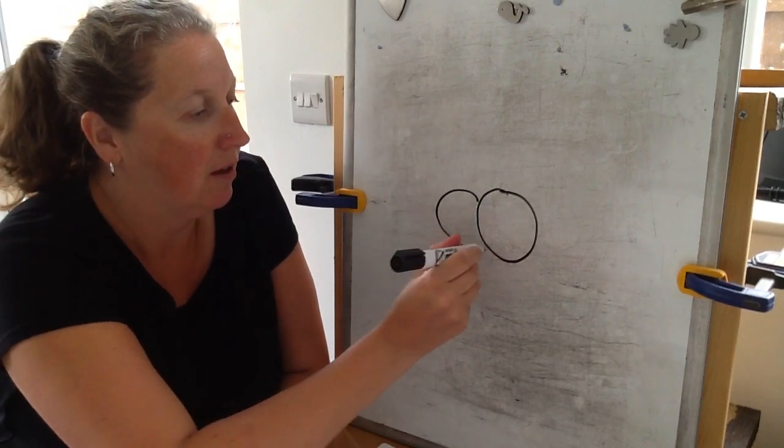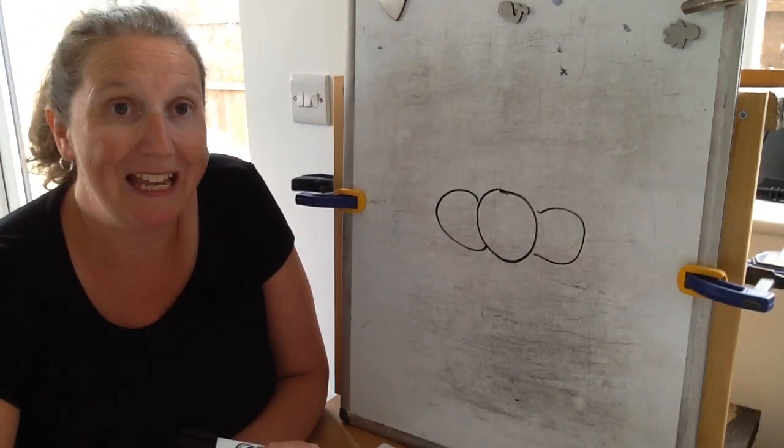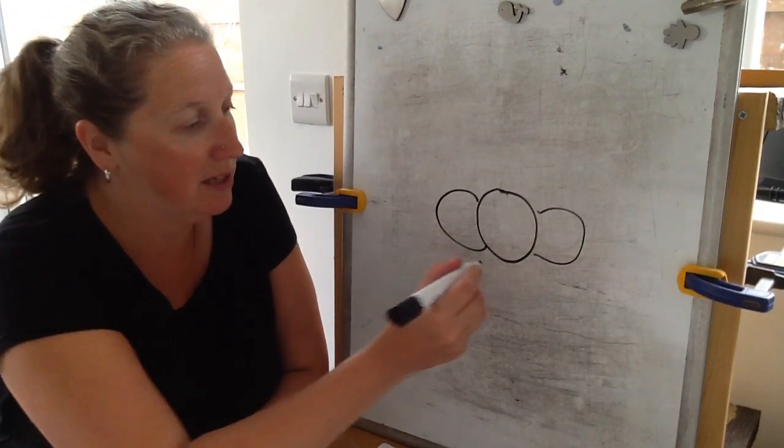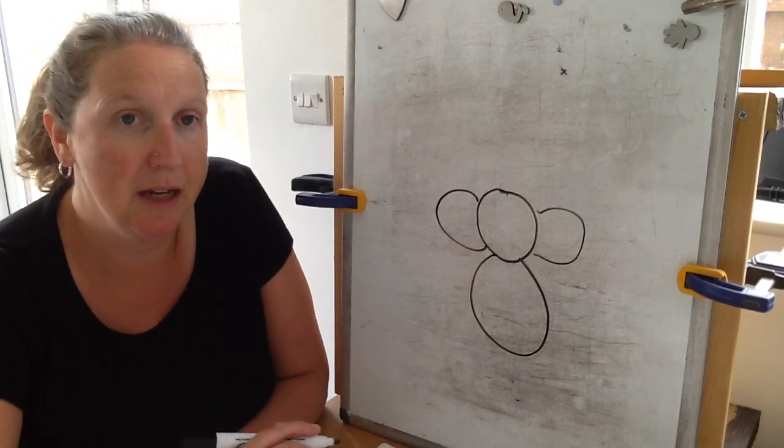So step two is I'm going to give him some ears. Okay, so step three is that he needs a big body.